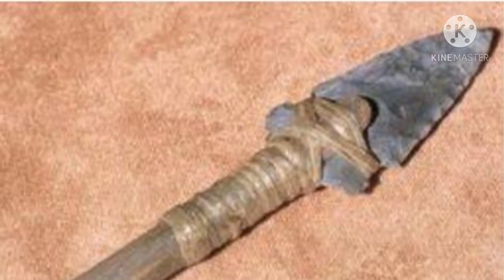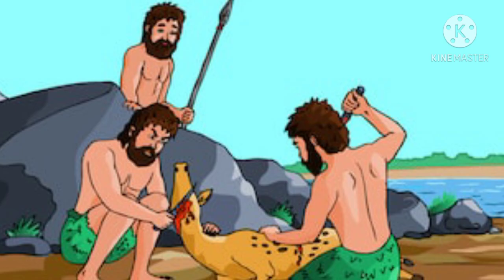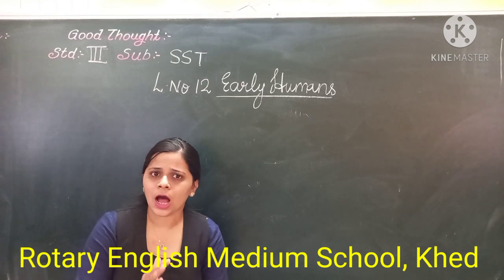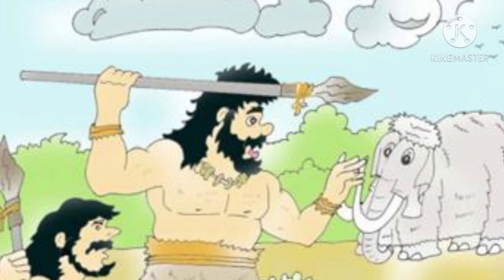Later, students, it was realized that if a stone was tied to a long piece of wood, it could be thrown at the animal. They lived in the forest so they needed to protect themselves from wild animals and also needed a tool to hunt. We talked in the last video that they used to eat the raw flesh of animals because they did not know how to cook food. They realized that tying a stone to a long piece of wood and throwing it at an animal helps them to hunt without going near them.